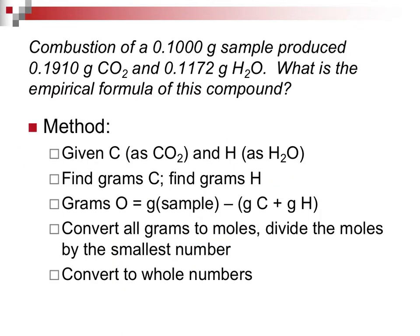Now, what is the method? Well, a typical problem looks like this. You obtain a sample weight, and it produces carbon dioxide and water. And from that, you can go and find an empirical, and if you have a mass spec, also the molecular formula. We don't push you that far. So what is the method? You're given carbon as CO2 and hydrogen as water. First thing you're going to do is find the grams of carbon and find the grams of hydrogen. You're going to use those two numbers to come up with the grams of oxygen because the sample contains C, H, and O.